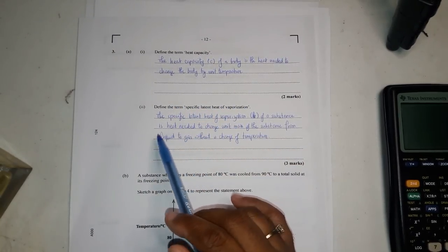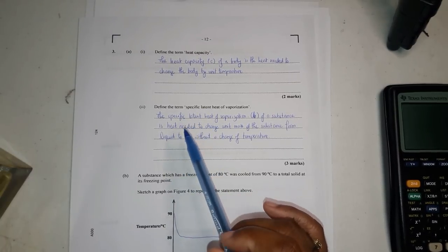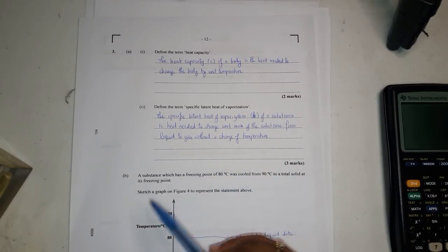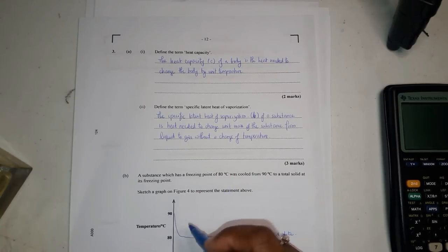The second one is define the term specific latent heat of vaporization. The specific latent heat of vaporization of a substance is the heat needed to change unit mass of the substance from a liquid to gas without a change of temperature.